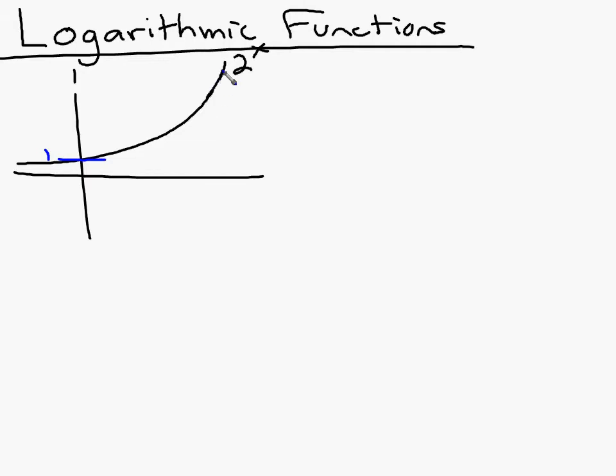And the inverse function, if you remember, the inverse is reflected across the line y equals x. That's our reflection line. So if the exponential function goes through 1 on the y-axis, then its inverse has to go through 1 on the x-axis. And if the original one has a horizontal asymptote at 0, then the new one has a vertical asymptote at 0. So our inverse function looks like that.